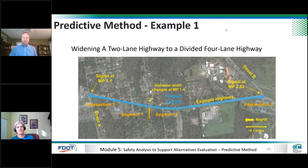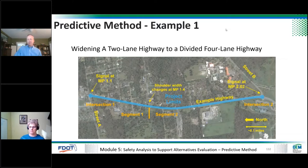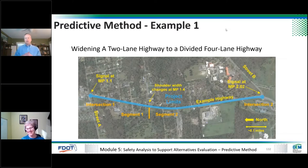We're going to get into more complexities as we go through the rest of this predictive session. There are things to think about and ways to work around limitations to get to good and reasonable answers, and it does surface important safety issues we need to be thinking about. I'm going to go through an example of widening a two-lane highway to a divided four-lane highway. Some of the material we're presenting today comes out of the guidebook, which is available to all of you online right now.